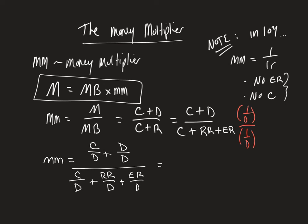And that means that we are going to get, remember that C over D was just equal to a lowercase c. D over D is going to just be equal to 1.